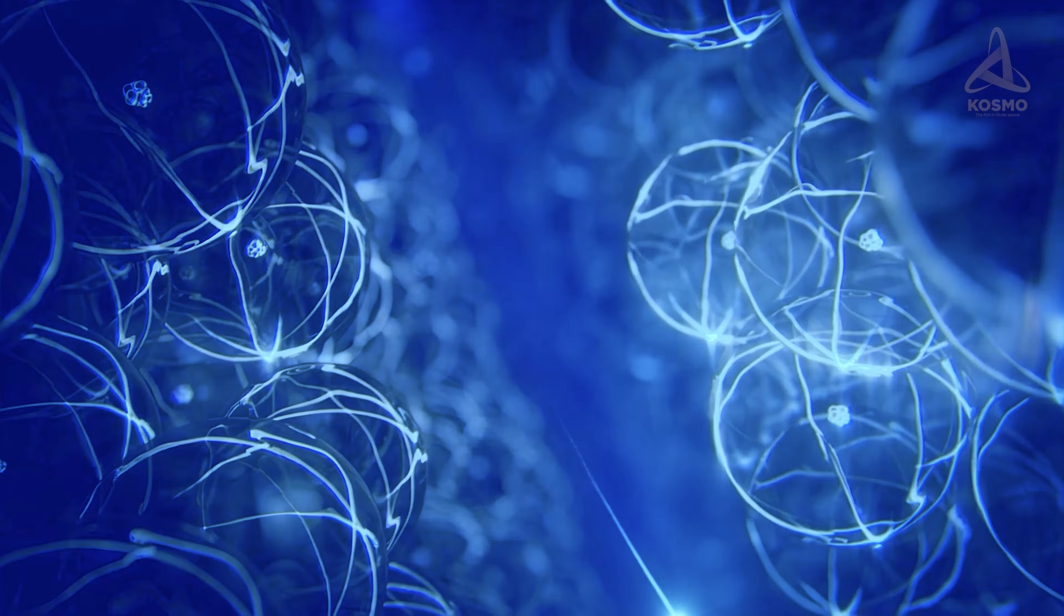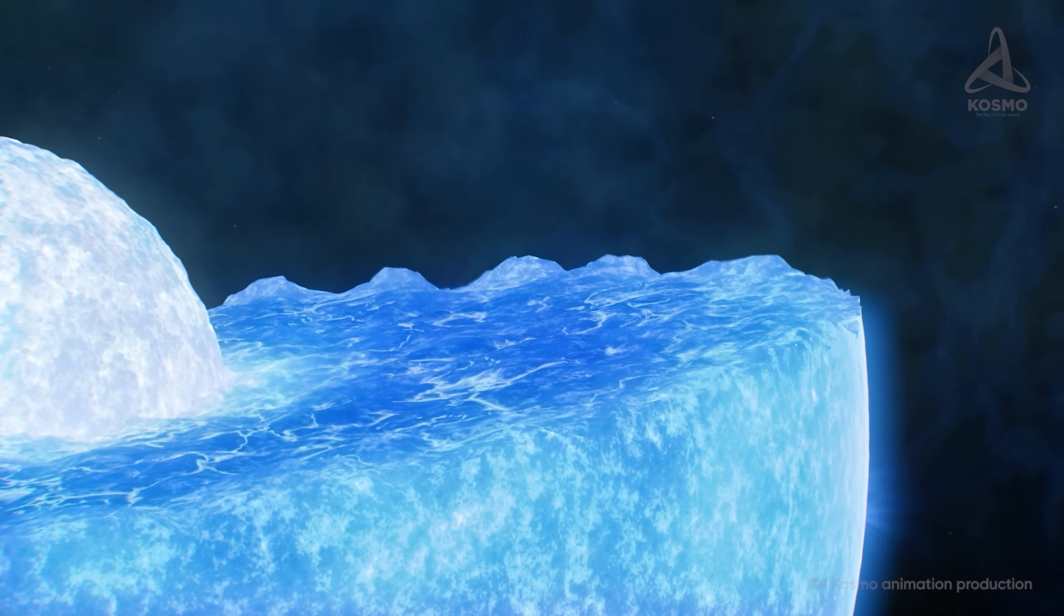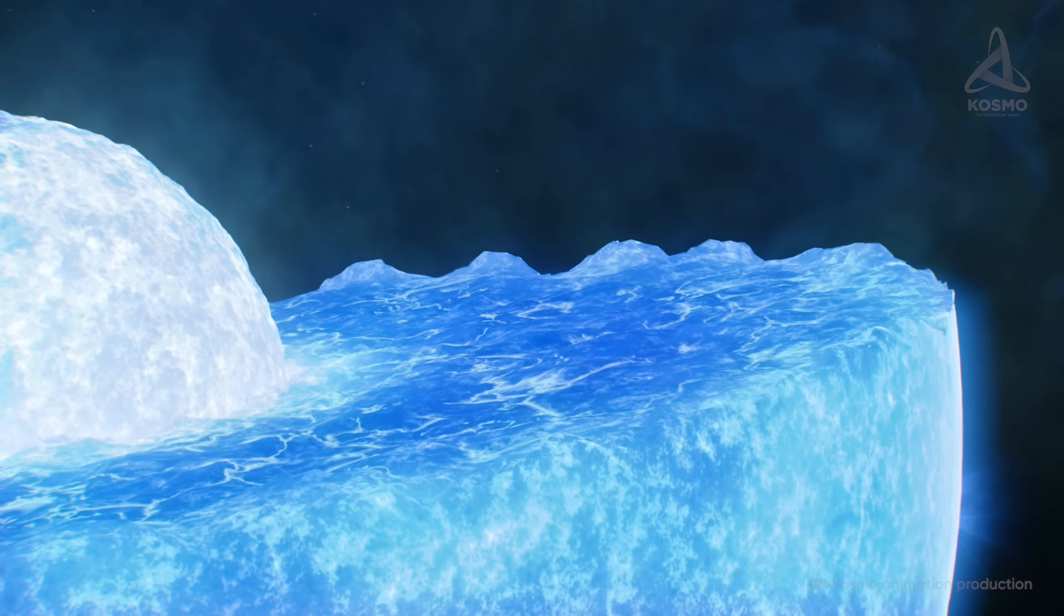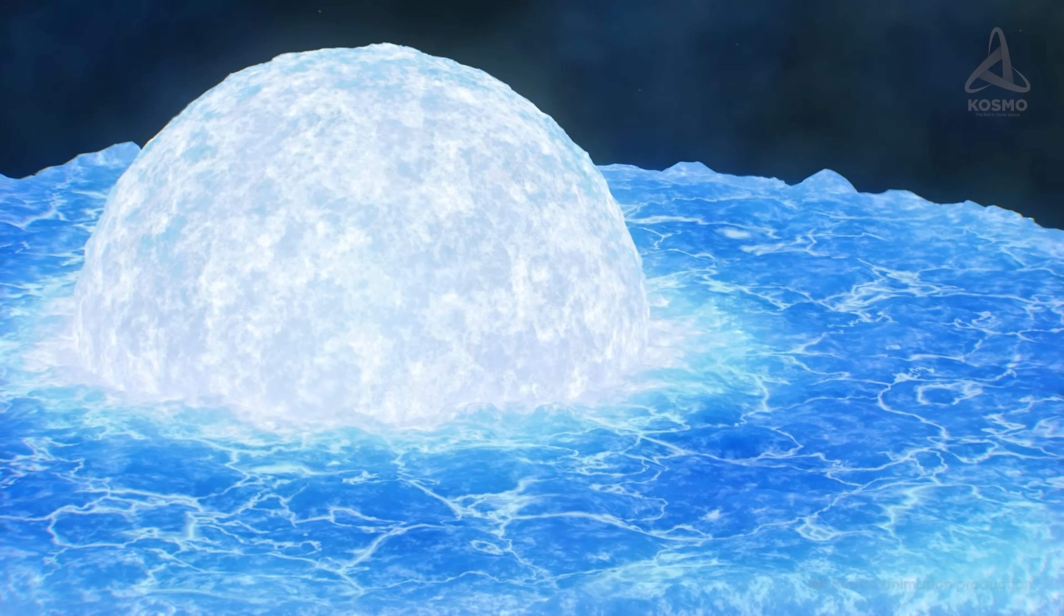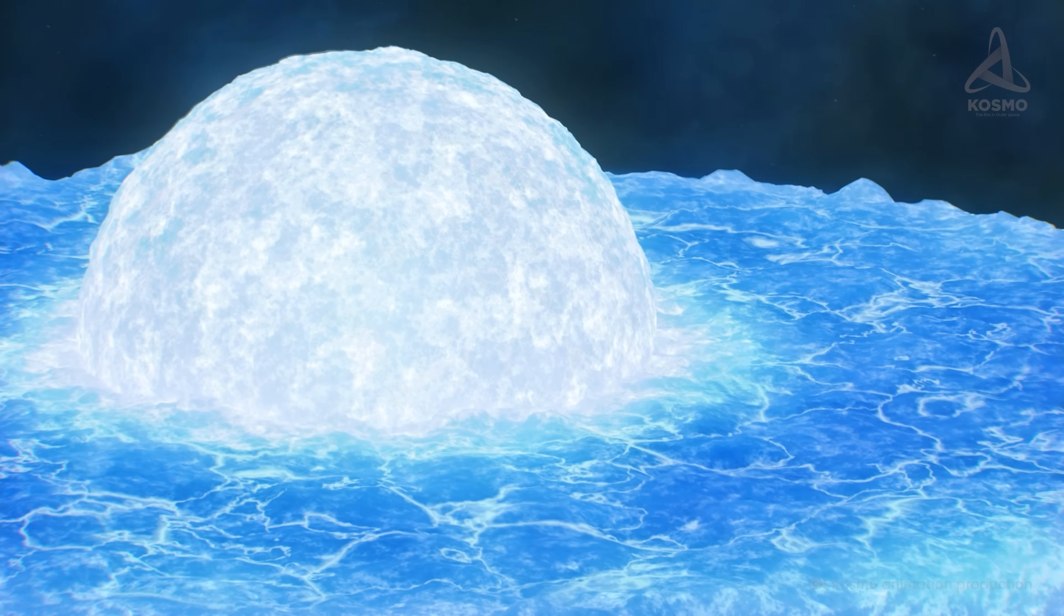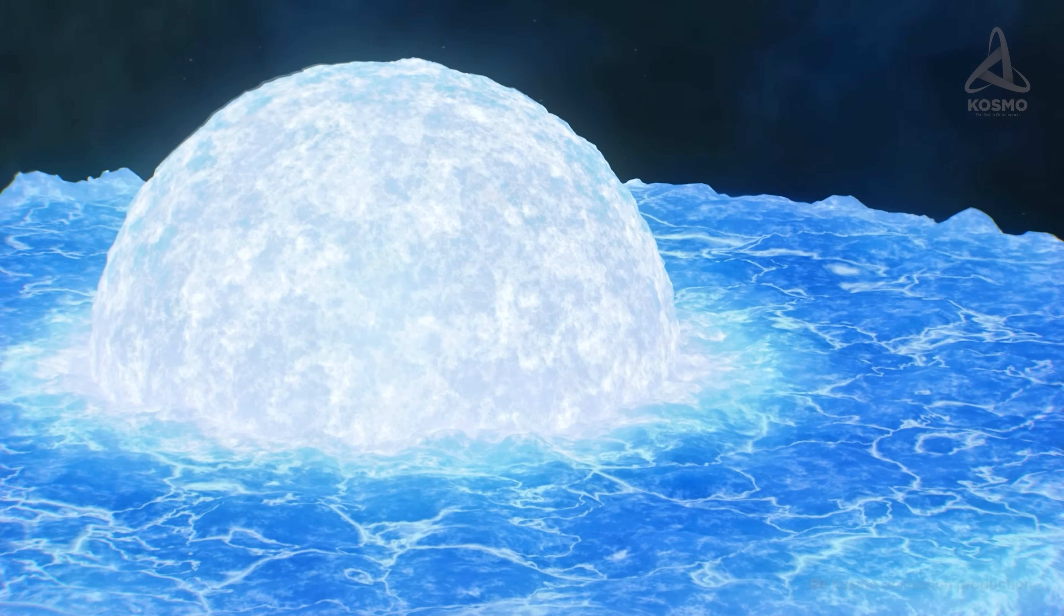In turn, beneath the inner crust there lies the outer core, which consists entirely of neutron matter. This amazing substance is a multitude of tightly compressed neutrons, and its density is 10 to 15 times higher than that of the atomic nucleus. For example, our planet compressed to the same degree would have a radius of only 150 meters, and a cubic centimeter of its volume would contain several billion tons of neutron matter.